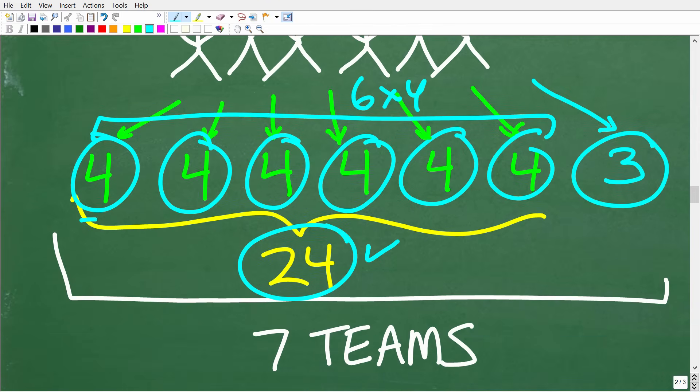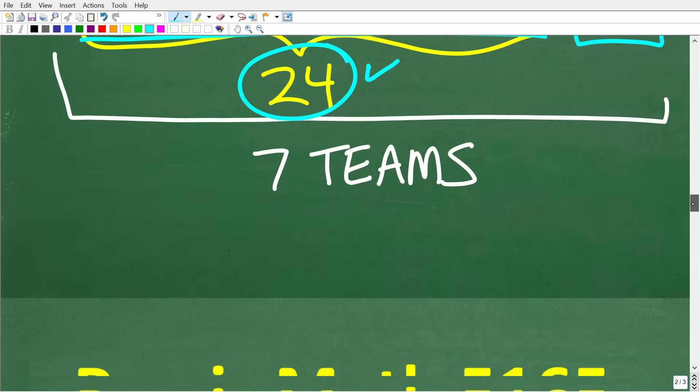So we're going to need 1 team of 3. So how many total teams do we have? 7 teams, right? We have 6 teams of 4 and then, of course, we have 1 team of 3. So, again, very simple but very easy to make an error.